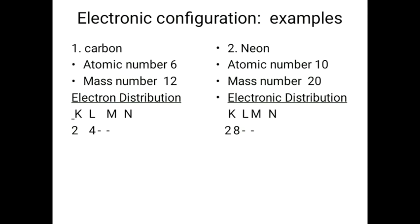The second example is neon. Neon has atomic number 10 and mass number 20. The first energy level accommodates 2 electrons, and the second energy level accommodates the remaining 8 electrons. So neon's electronic configuration is 2, 8. It is simple.